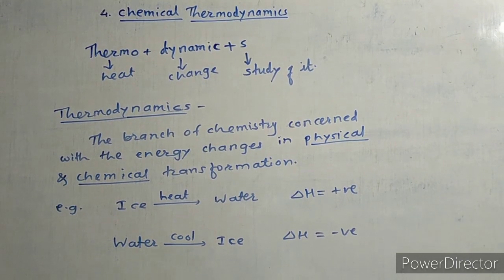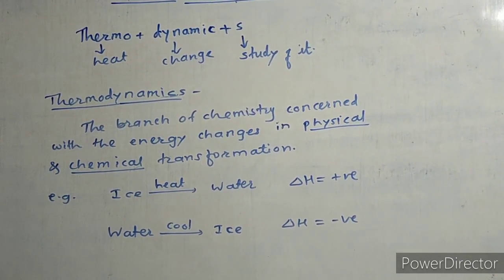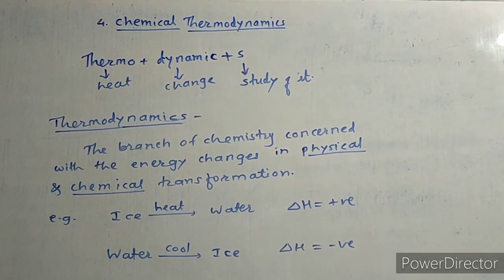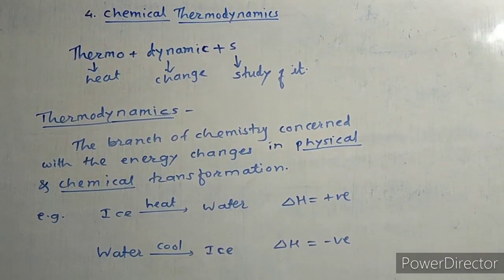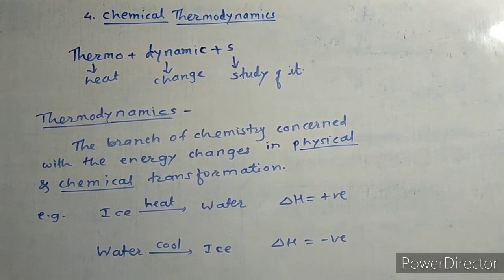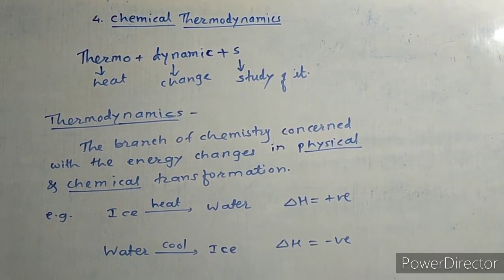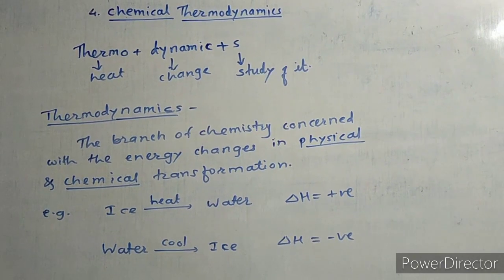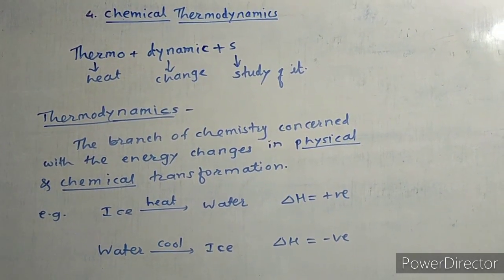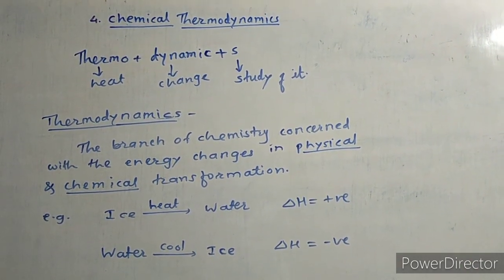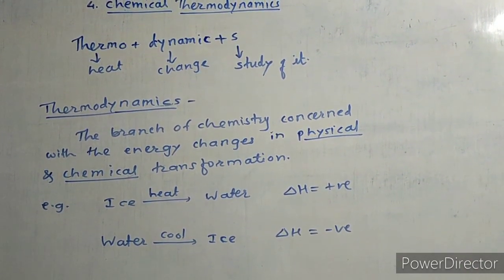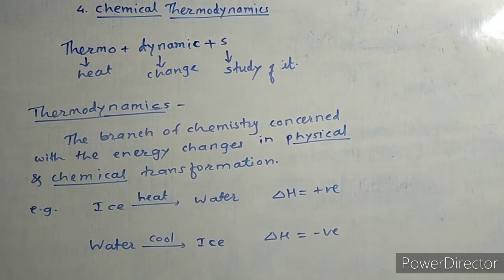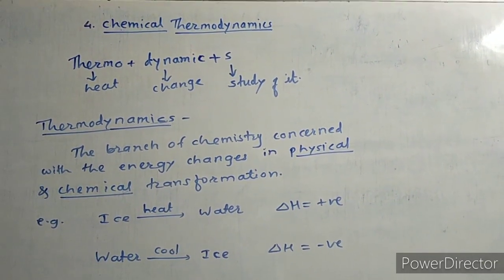In this topic we study energy changes during physical and chemical transformation. For example, ice gets converted into water when heat is absorbed — in this case delta H is positive. But when water cools to convert into ice, heat is given out from the system, so delta H is negative.